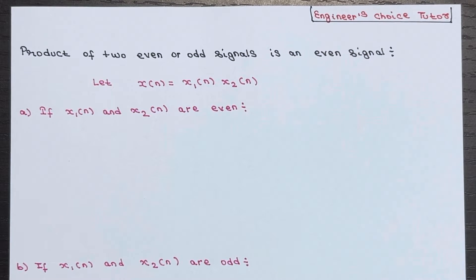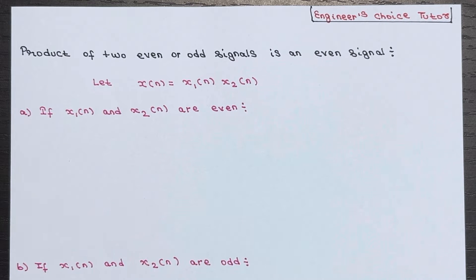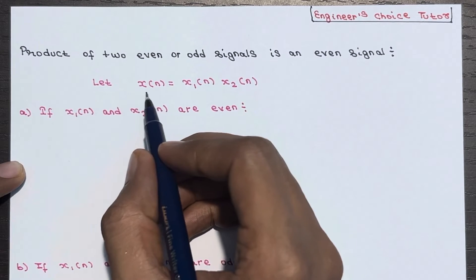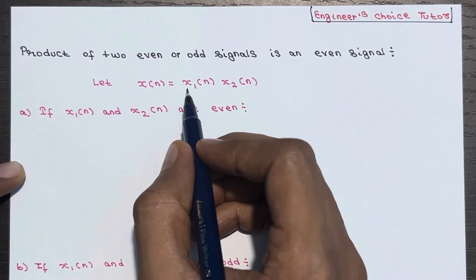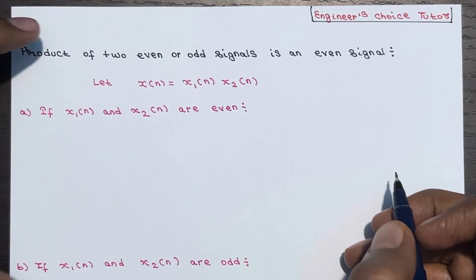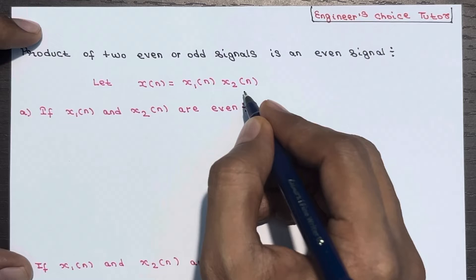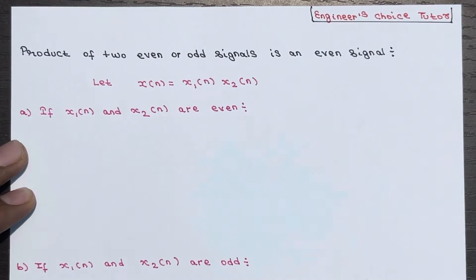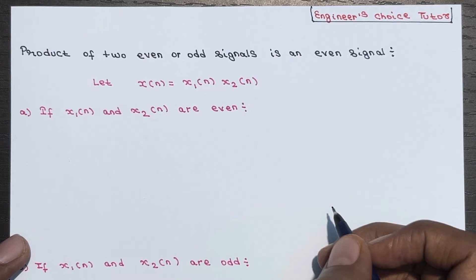In the last lecture I mentioned that the product of two even or two odd signals is an even signal, and the product of an even signal and an odd signal is an odd signal. In this lecture I am going to prove these statements. The resultant signal x(n) is basically the product of two signals x1(n) and x2(n). For the first case, we will see if x1(n) and x2(n) are both even signals.